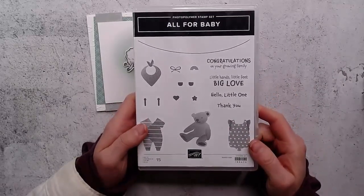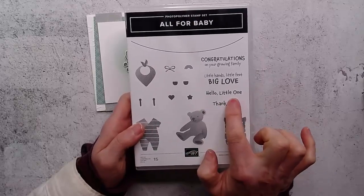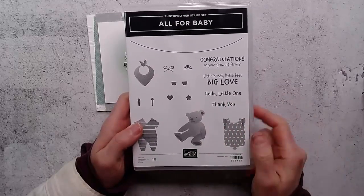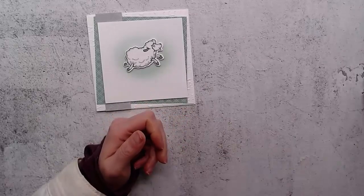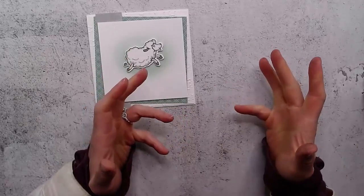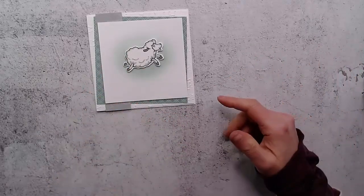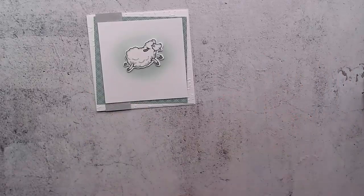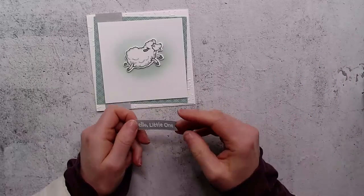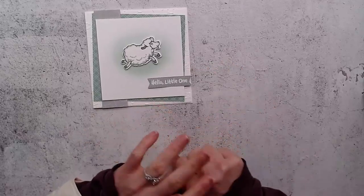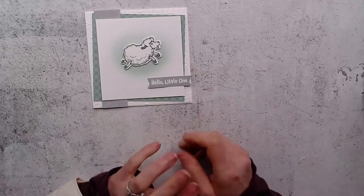But if you have the mini messages or the mini happenings dies which are the stamp set which is that big one with a whole lot of sayings, there's quite a few baby ones in that as well. So I've white embossed that on smoky slate.